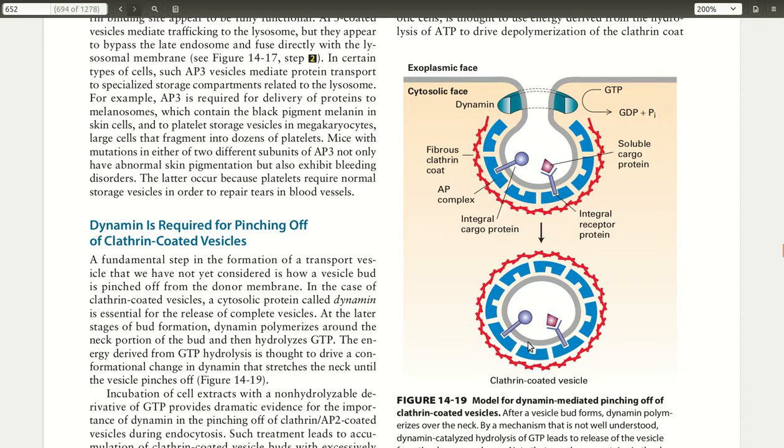Once the budding occurs, you can see that the vesicle will have its complete structure here where you have the cargo proteins in the interior membrane, then you have the lipid bilayer of the vesicle, and outside of there you have the AP complex shown in blue and then the fibrous clathrin coat in red.